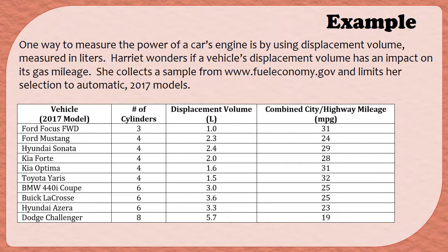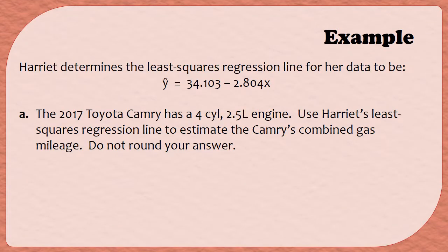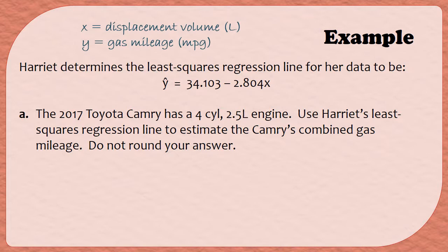So throughout these Module 4 videos, we are looking at an example of data collected by Harriet concerning the displacement volume of an engine and its combined city and highway mileage. In a previous video, we determined that the displacement volume was the independent variable, meaning it gets to be x, and the combined mileage is the dependent variable, meaning it gets to be y. We're going to need this information as we move forward in the following examples. Just so we keep it as a reminder, I'm going to write at the top of the screen that x is still representing our displacement volume, which is measured in liters, and y is representing our gas mileage, which is measured in miles per gallon. Now, Harriet has used some form of technology or some different formulas to determine her equation of the least squares regression line. So she's got this equation, ŷ = 34.103 - 2.804x. We're going to use this equation to answer a couple of questions.